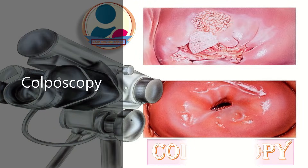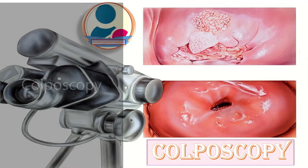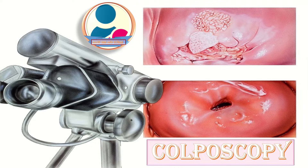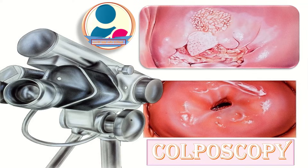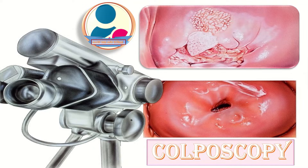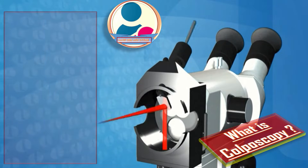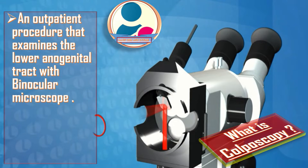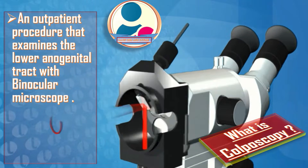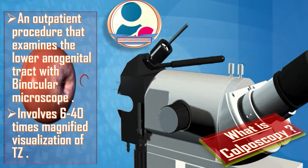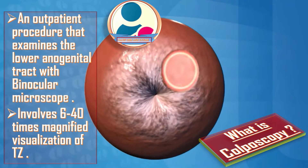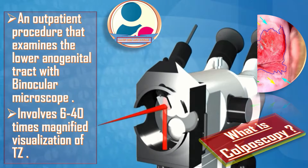This video is about colposcopy. When we do a pap smear and find dyskaryotic changes, the next step in the cervical screening program is colposcopy. Colposcopy is an outpatient procedure that examines the lower anogenital tract with a binocular microscope. It involves 6 to 40 times magnified visualization of the transformation zone of the cervix.